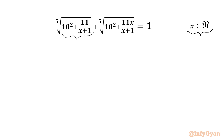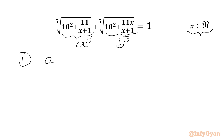I will call the first radicand equal to a⁵ and the second radicand equal to b⁵. So the very first equation we can write from here: fifth root of a⁵ is a, fifth root of b⁵ is b, giving us a + b = 1. This is our equation number 1.